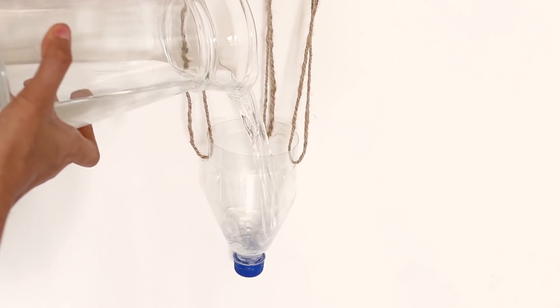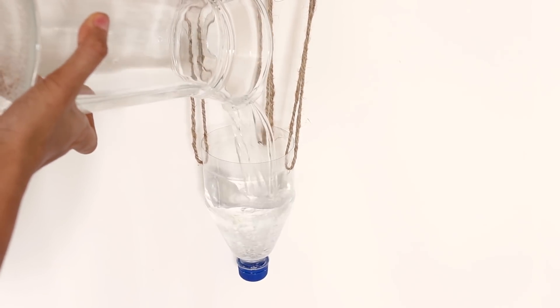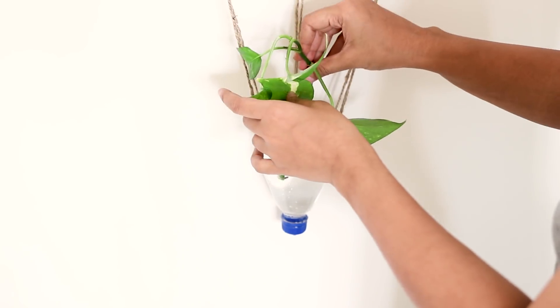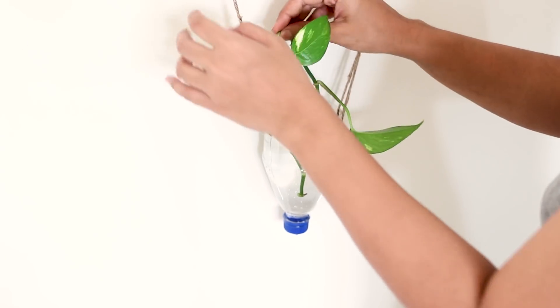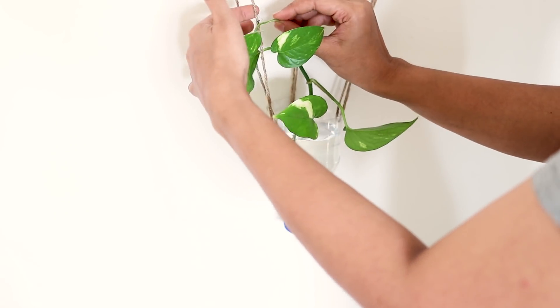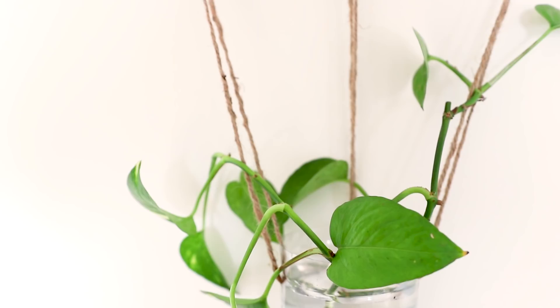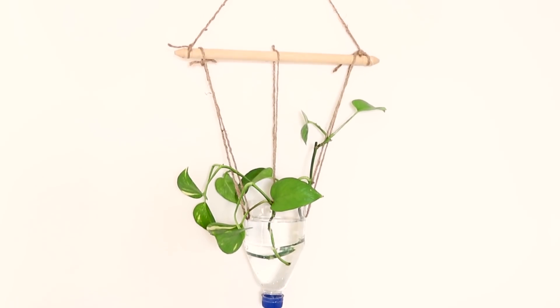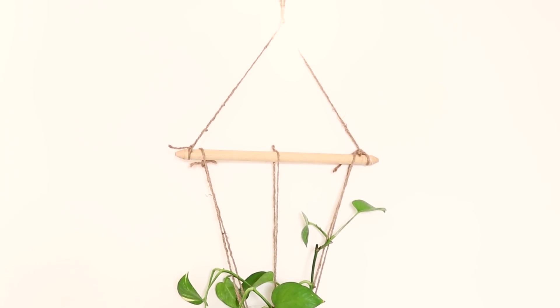And that's it. Now you can add water and use any plant cutting. My evergreen favorite is money plant. I think it's more fun this way rather than that boring way where you just put the cutting in a bottle. Isn't it?